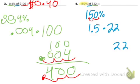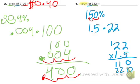So 22 times 1.5. 5 times 2 is 10, carry the 1. 5 times 2 is 10, plus 1 is 11. Bring down a 0. 1 times 2 is 2, and 1 times 2 is 2. Add these up, and we get 330.